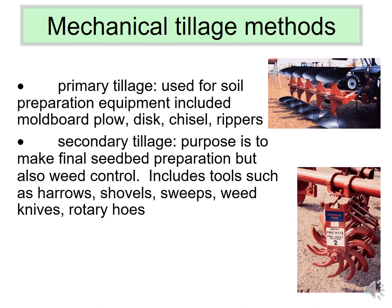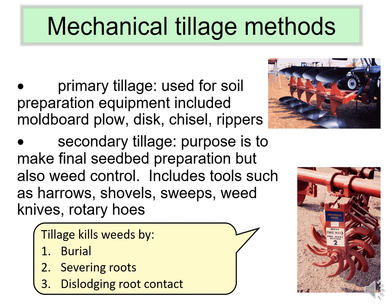Secondary tillage implements — such as sweep shovels, rotary hoe harrows — are reserved for weed control. The primary ways these kill weeds are burial (like the moldboard plow) or by severing roots or dislodging root contact. For most small annual weed seedlings in the early weeks, simply dislodging soil contact is enough. After these operations, it is very important to hold off on irrigation as long as you can, because small weed seedlings won't survive until the next irrigation if the crop can tolerate the delay.